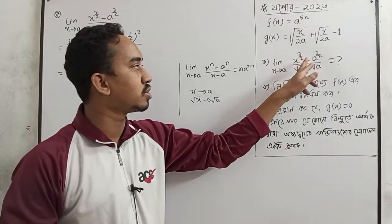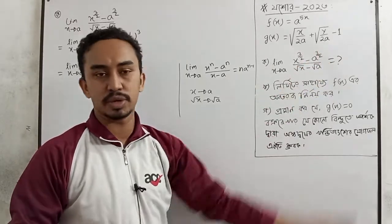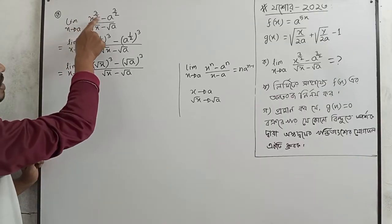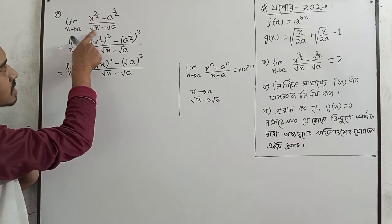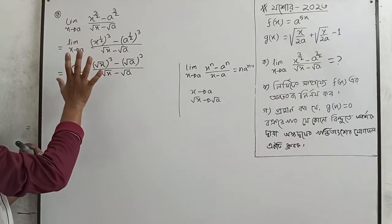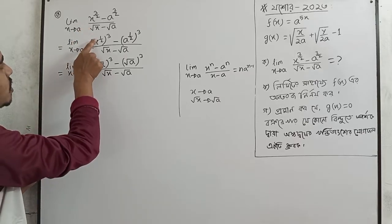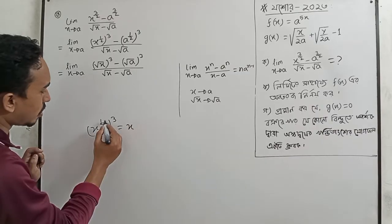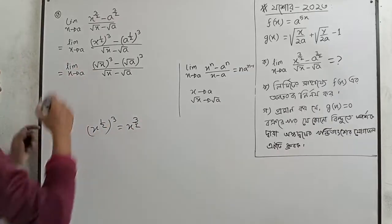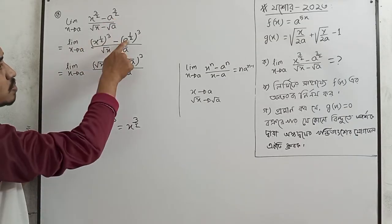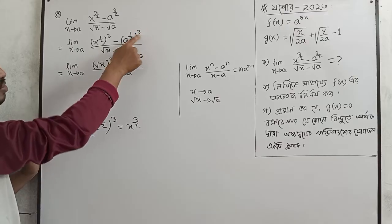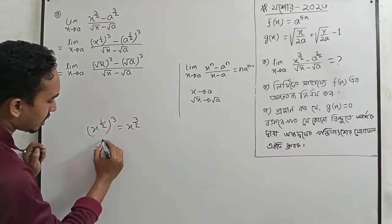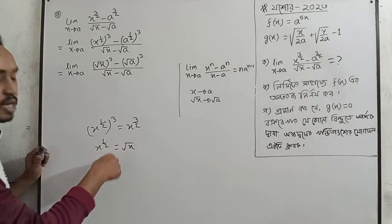We have the limit as x tends to a of x to the power 3 by 2 minus a to the power 3 by 2 divided by root x minus root a. We will solve this problem. x is to the power half.